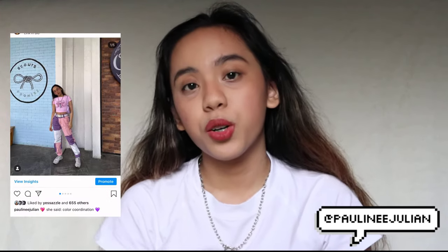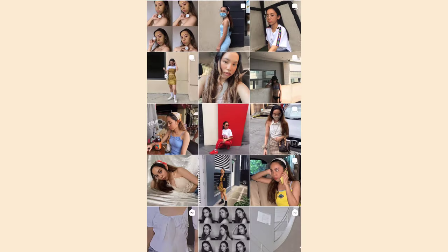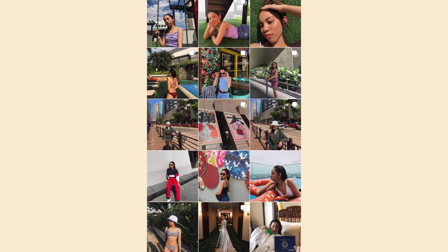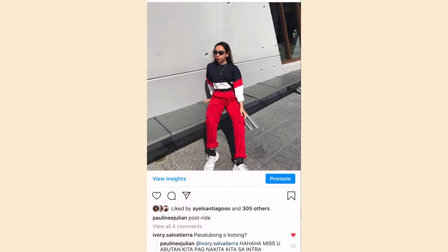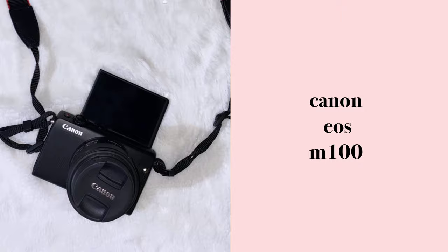The first thing we're going to talk about is equipment. That's basically one of the most important things if you are very serious about maintaining an aesthetic Instagram feed. But of course, those equipment do not need to be expensive. If you scroll down through my Instagram feed, the bottom half pictures were taken using my iPhone 7. But last January, I upgraded to my iPhone 11, and I've also been able to buy my vlogging camera, the Canon EOS M100.